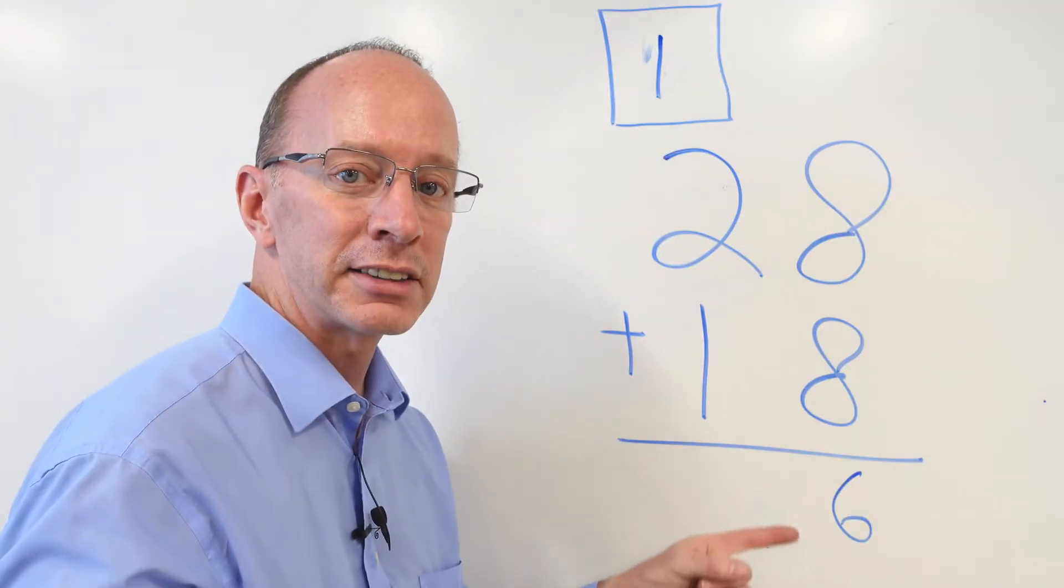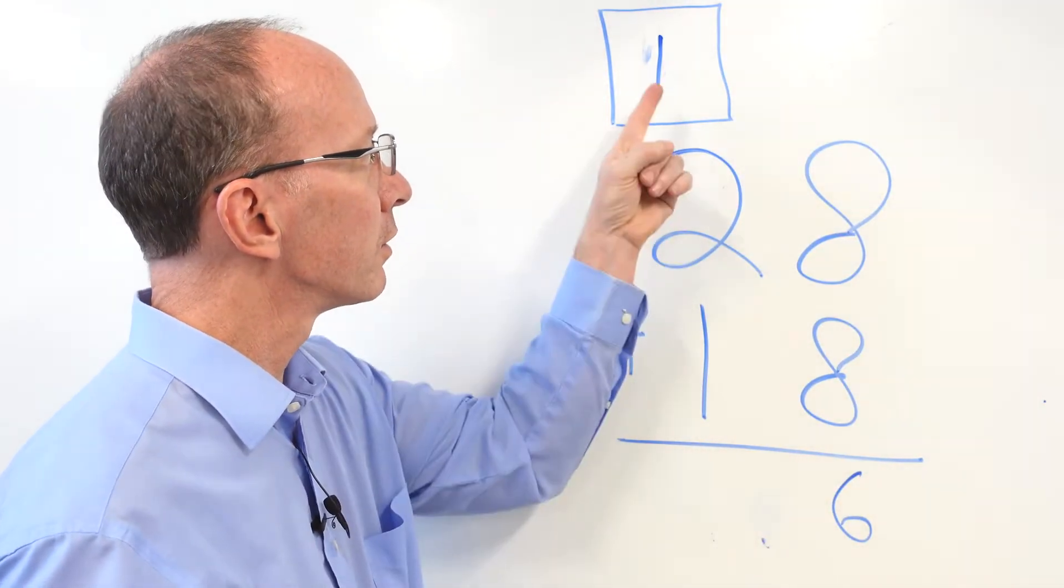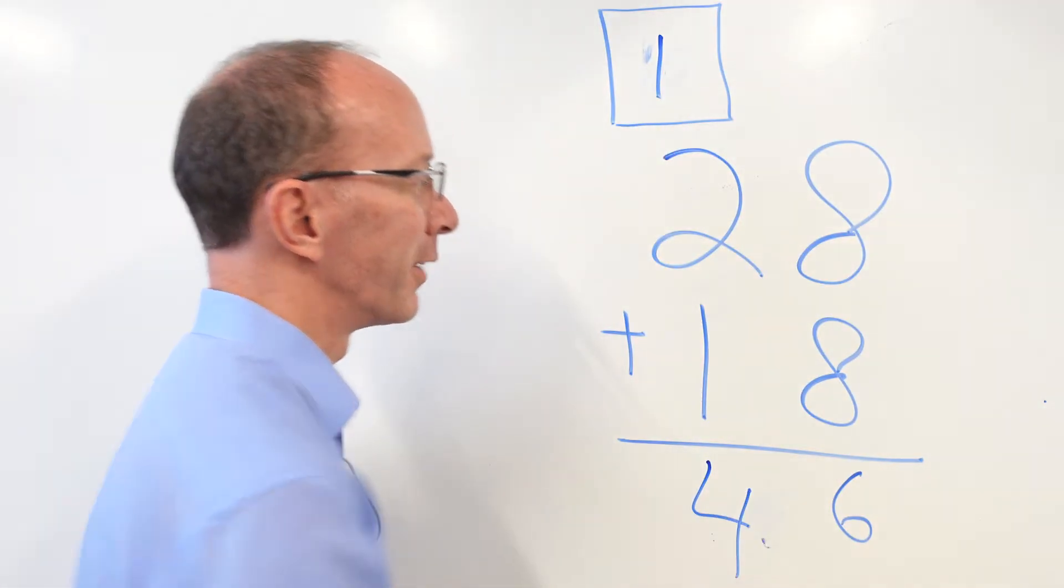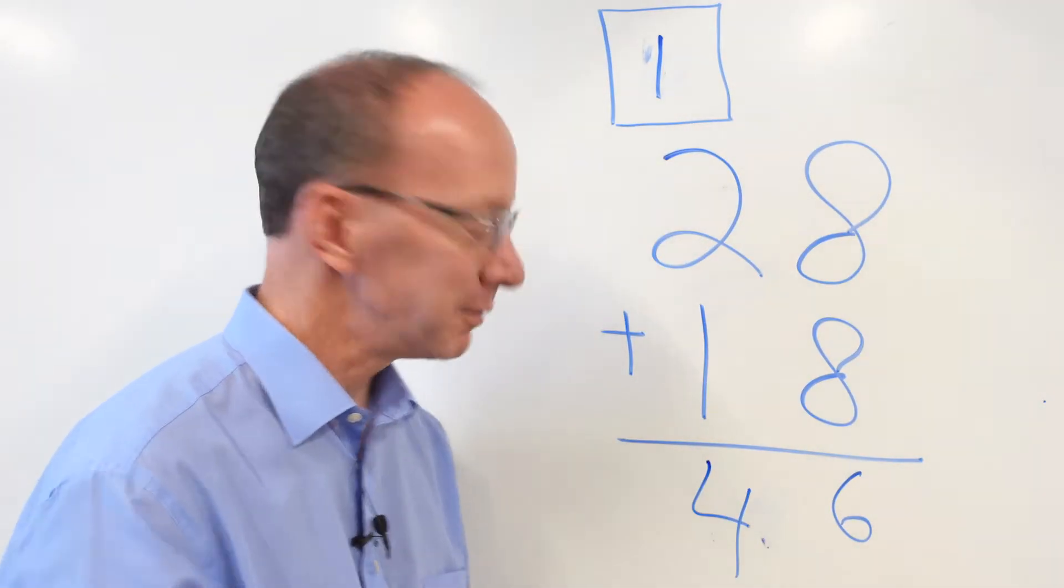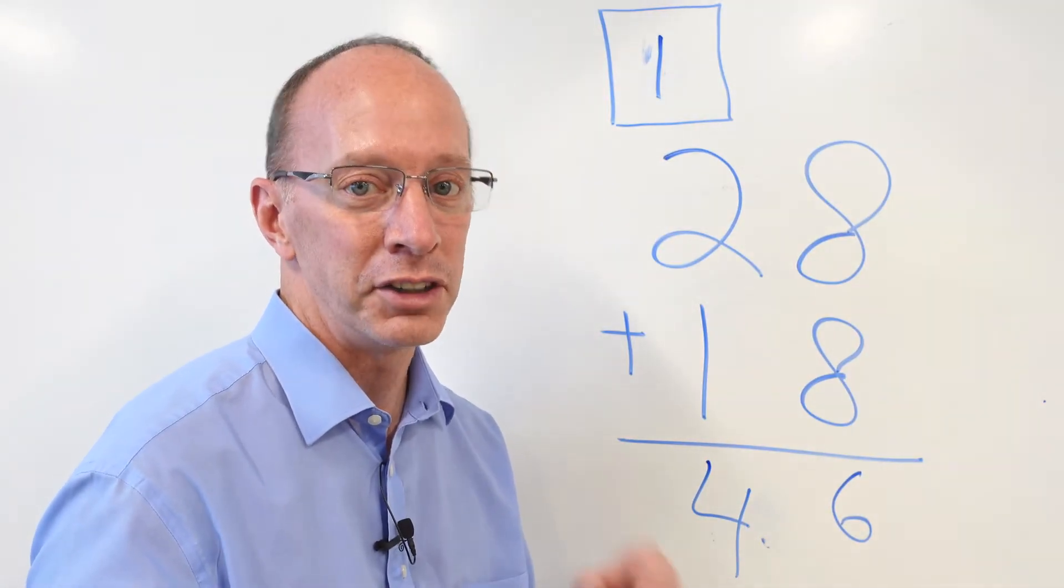All right, we regrouped. Now our next step is to add the tens. So we can go two, three, four. All right, 28 plus 18 equals 46. Hey, you're doing awesome. Let's do another one.